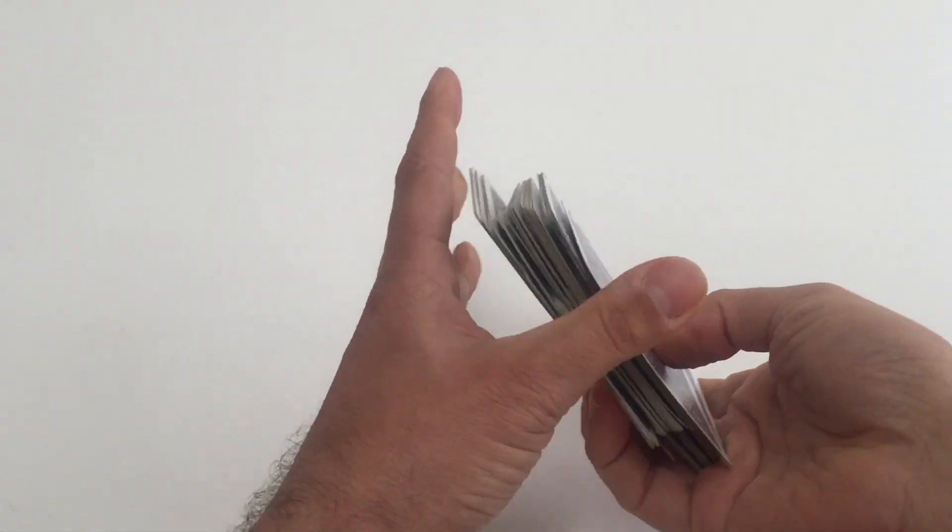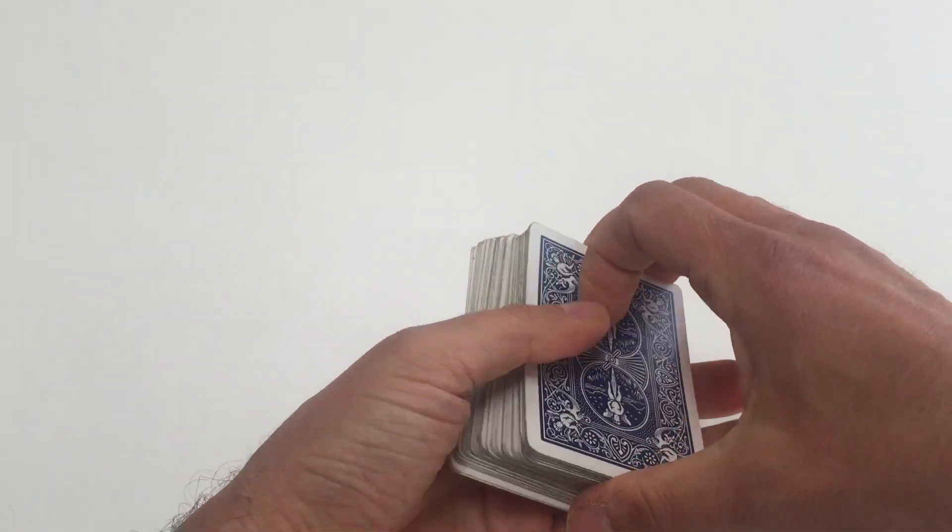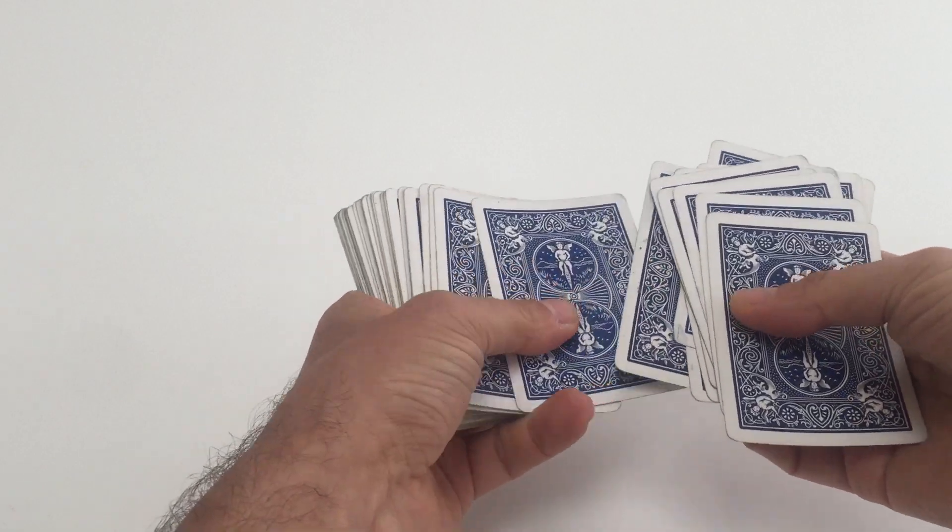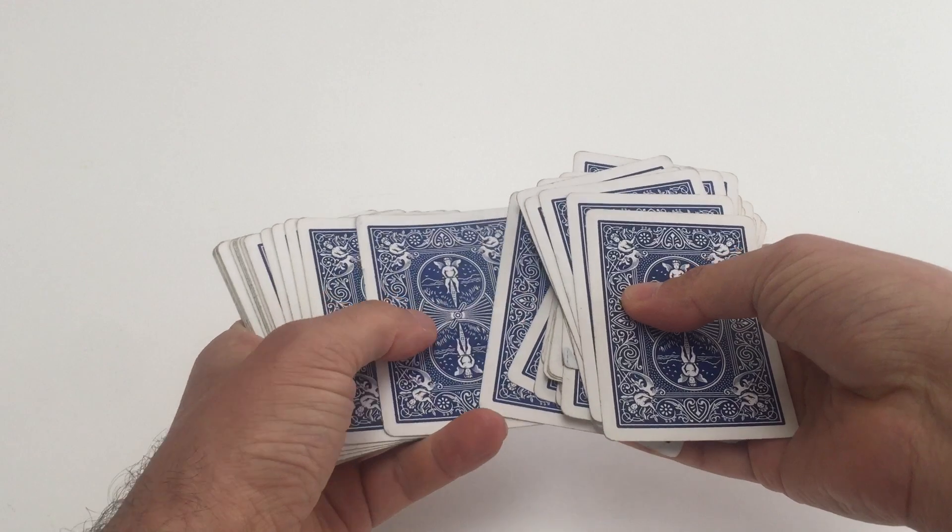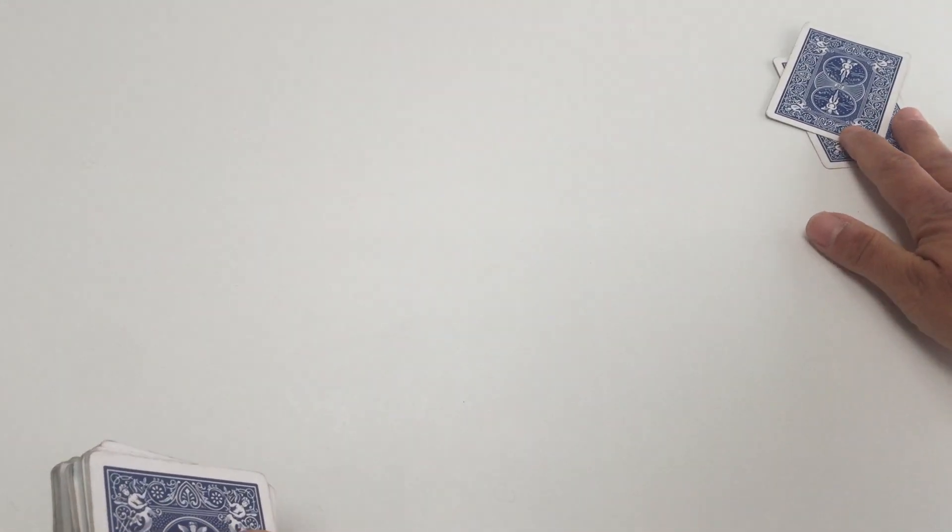Start by taking a deck of cards, complete deck of cards, 52 cards. Remove the jokers, give them a bit of a shuffle. Then remove any two cards you like from the deck. It really doesn't matter when, where, any two cards. Now put those to the side up there.